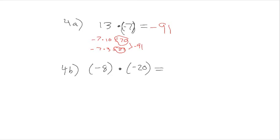For 4b, negative 8 times negative 20. We have a negative number times another negative number, and that means our answer is going to be positive. 8 times 2 is 16, so incorporating the 10 gives us 160. Since negative 8 is being multiplied by negative 20, the answer is positive 160.